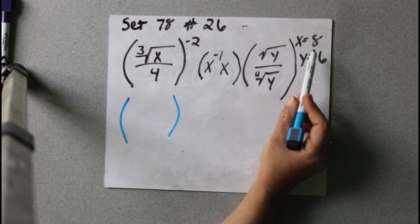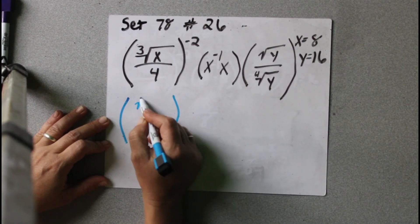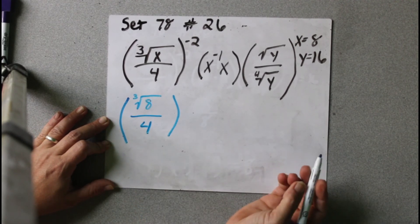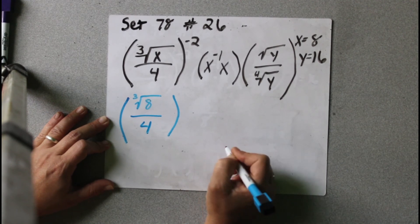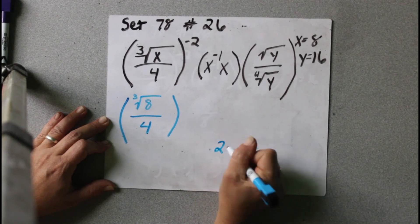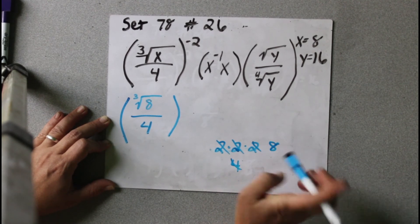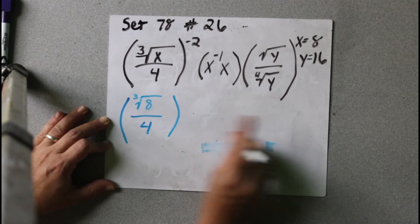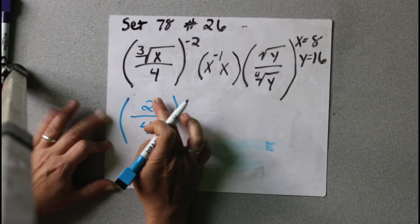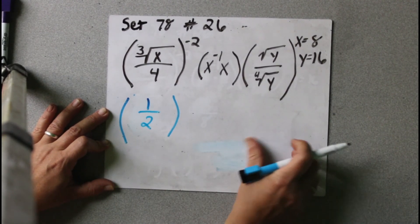I'm going to take these one step at a time, one parenthesis at a time, substituting in my values. The only variable in the first part is x, and that's 8. So the third root of 8 divided by 4. What's the third root of 8? That means something times itself three times equals 8. That's 2, because 2 times 2 times 2: 2 times 2 is 4, 4 times 2 is 8. So the third root of 8 is 2, and we can reduce 2 fourths down to 1 half.